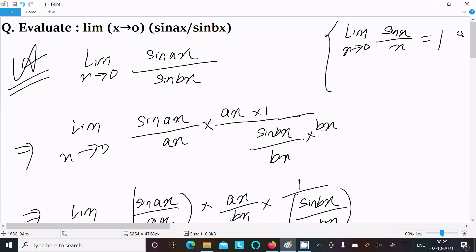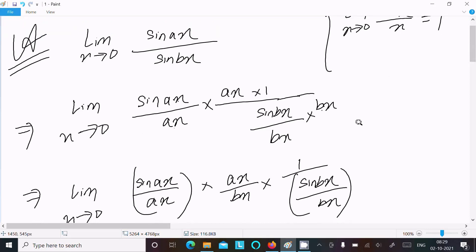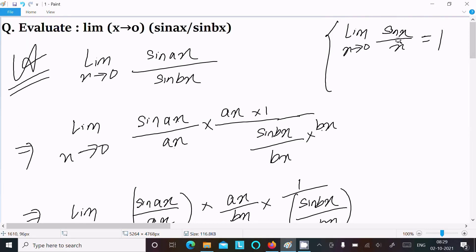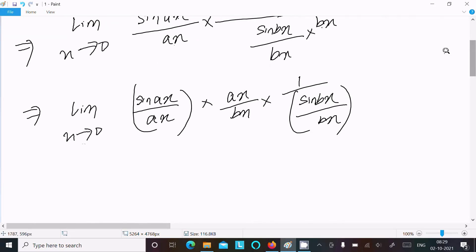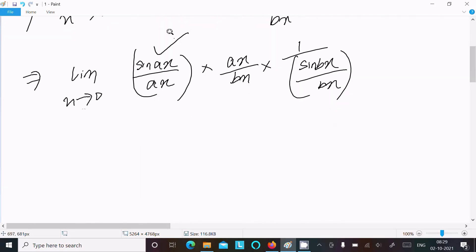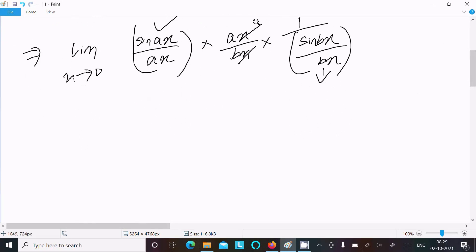Now after that, here this is sin(x) by x that is equal to 1. If I include here sin(ax) divided by ax, this term is the same, so this value returns 1. This value returns 1. And here a·x, x cancels.